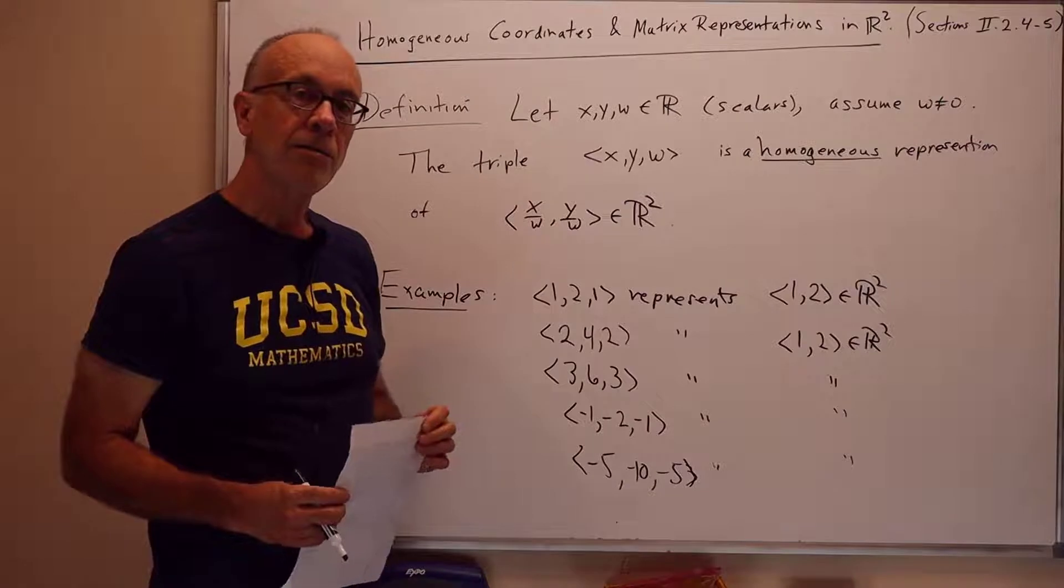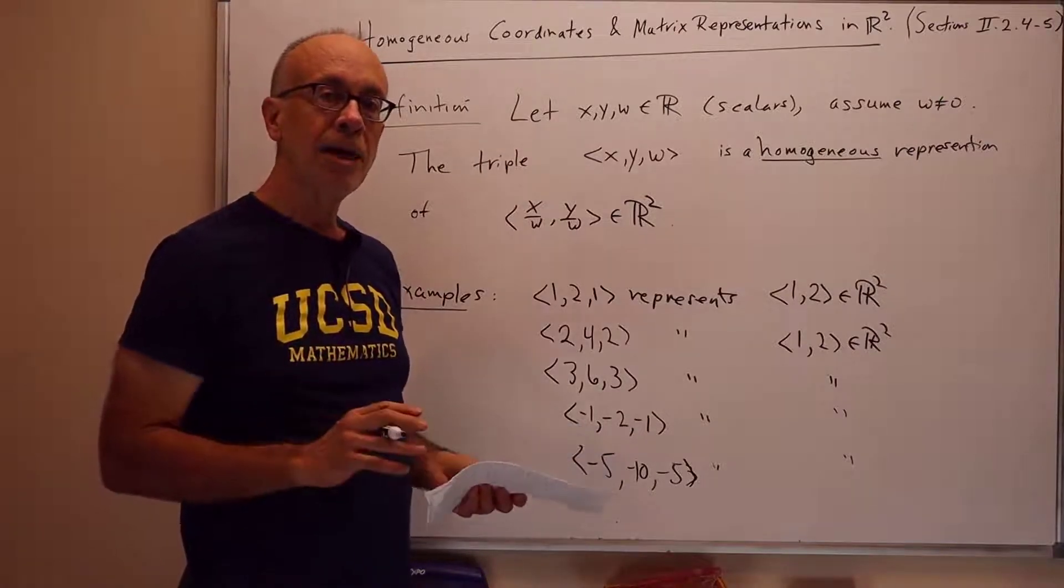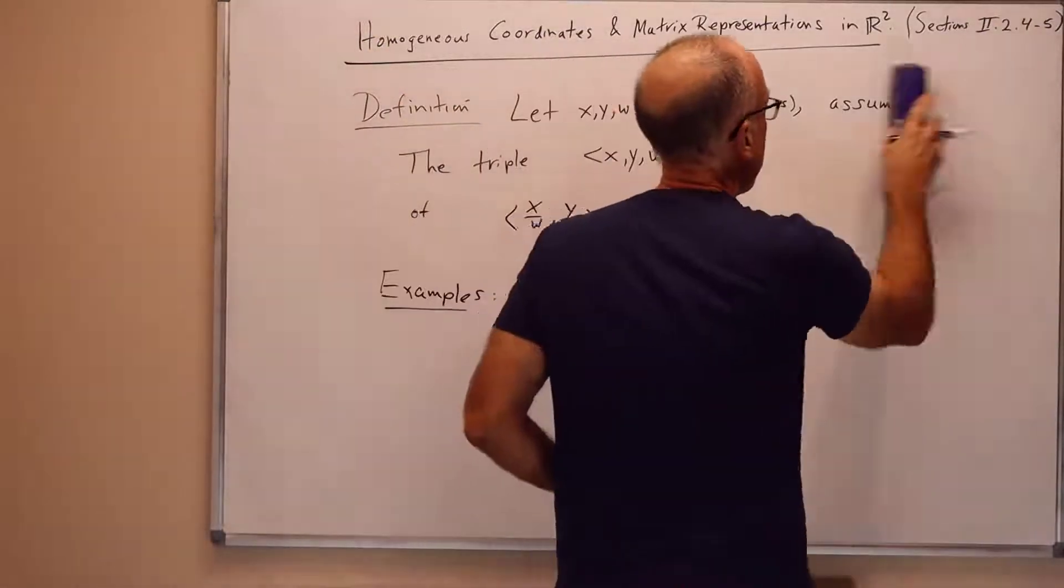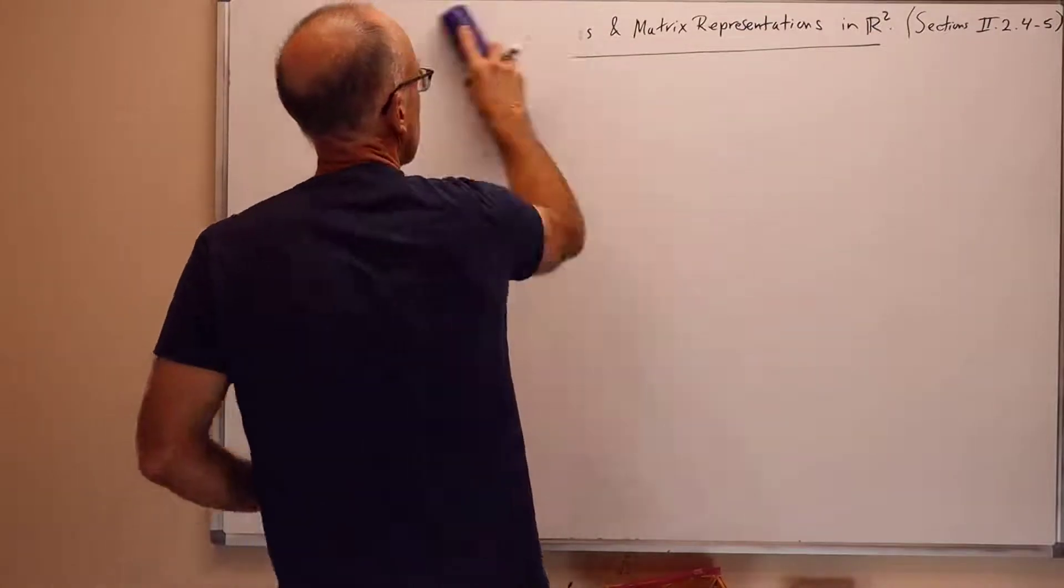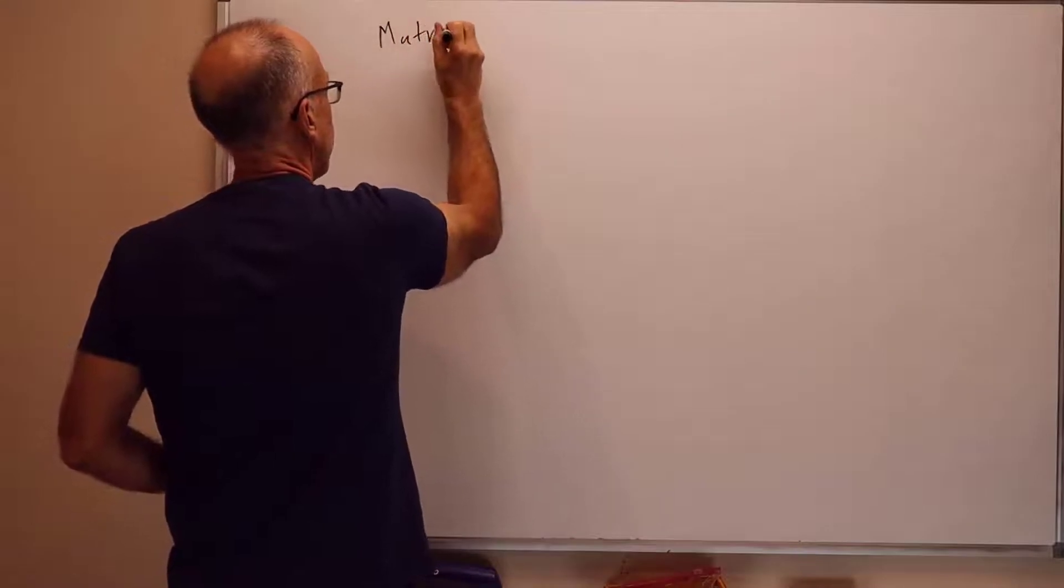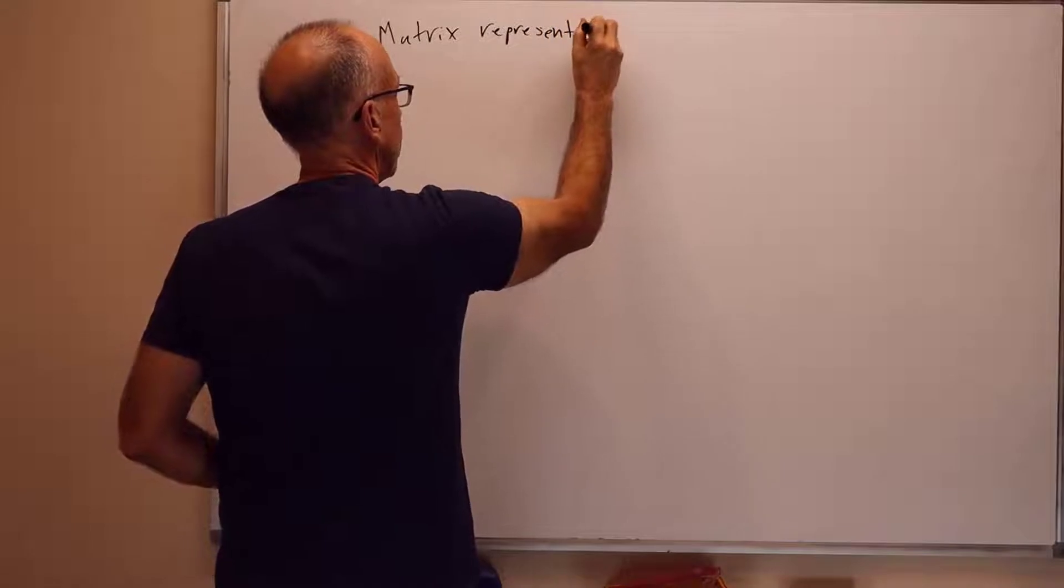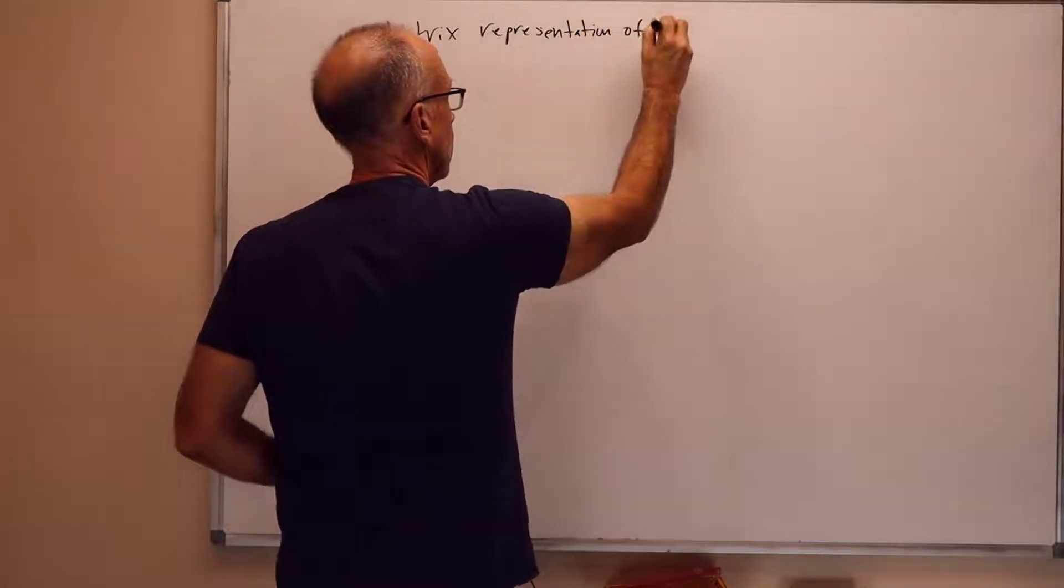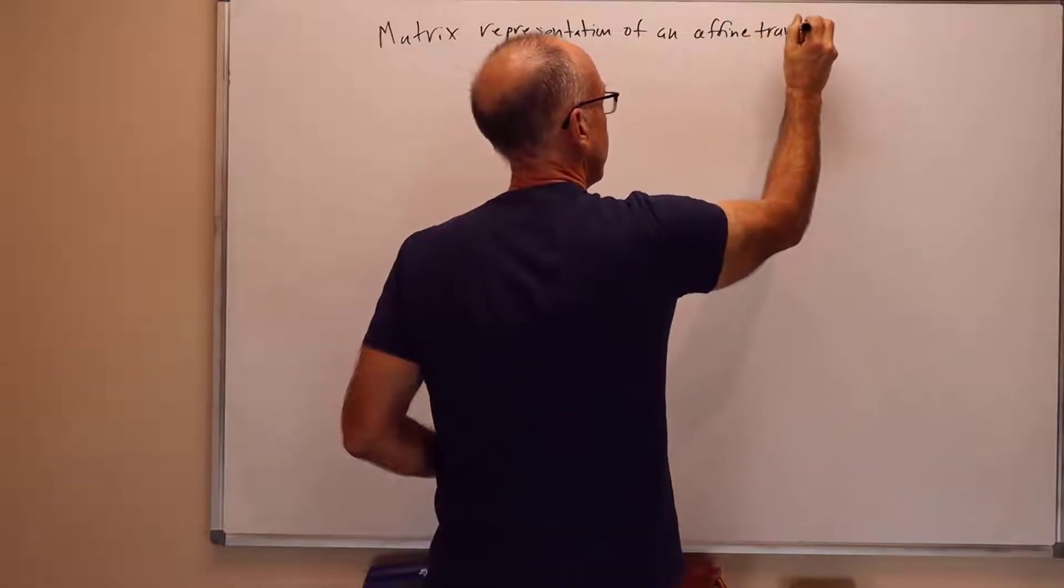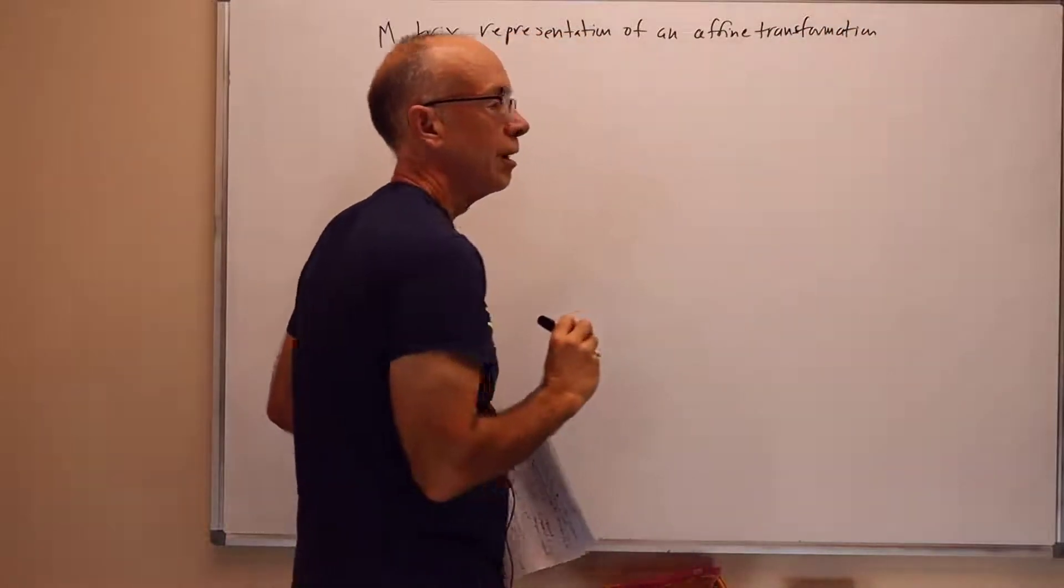So, a particularly useful thing with homogeneous coordinates, to get us started at least, is to use matrix representations for affine transformations. So, we're going to deal with an affine transformation in R2, and we want to give a matrix representation.